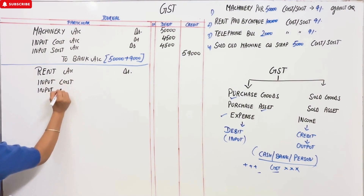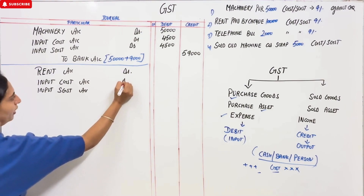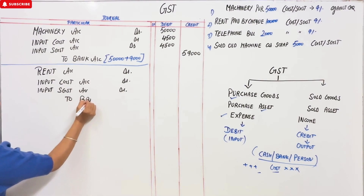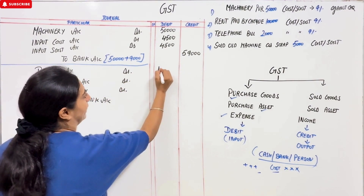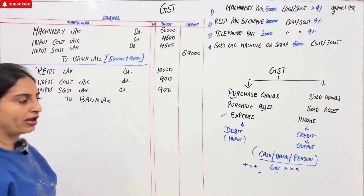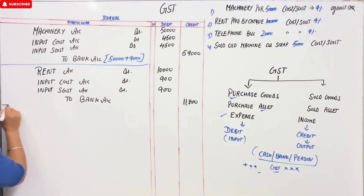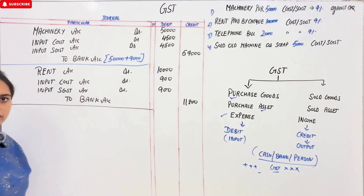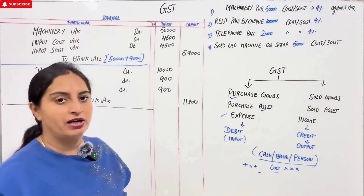For the rent entry: Rent Expenses Account — Debit, Input CGST Account — Debit, Input SGST Account — Debit — To Bank Account. Payment was by cheque so it goes to bank. Rent is Rs. 10,000, tax at 9% is Rs. 900 each side, so total payment to bank is Rs. 10,000 plus Rs. 1,800 = Rs. 11,800. This makes it clear that the tax amount is added to the bank/cash figure.